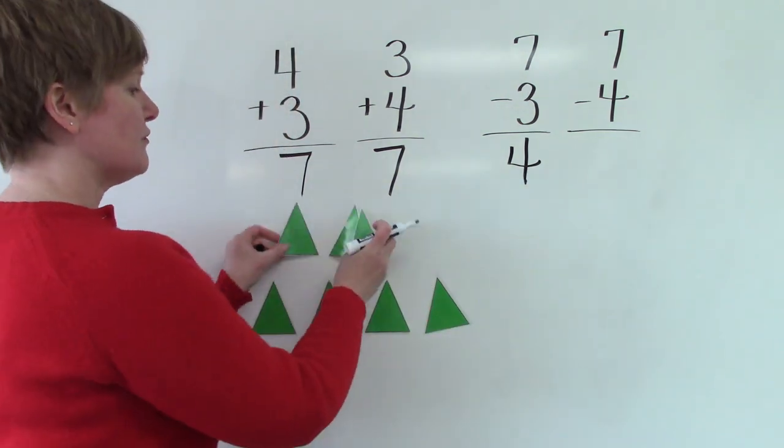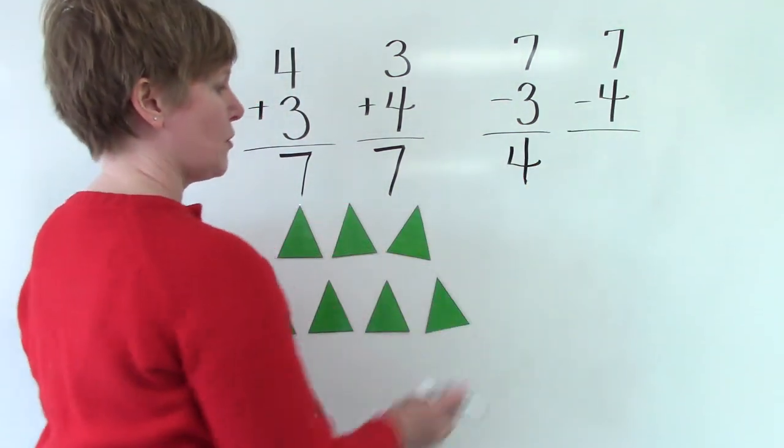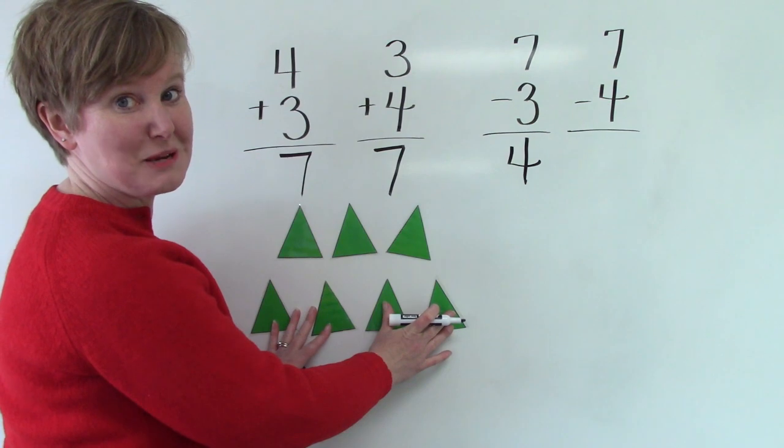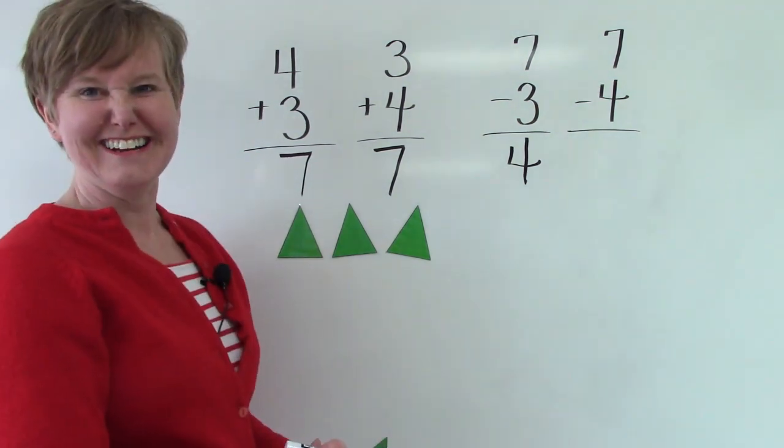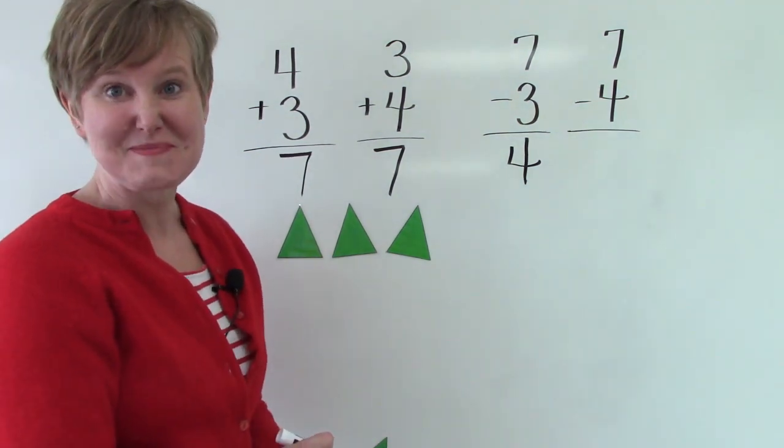And what if we take 4 away from 7? Let's take them away. They're gone. How many do we have left? 3.